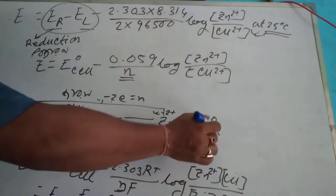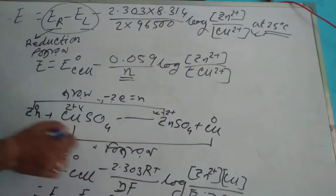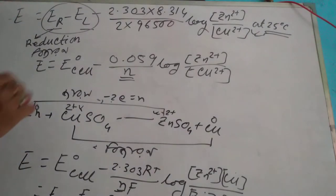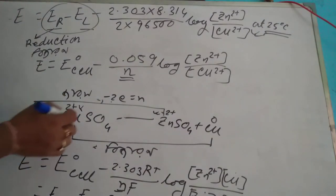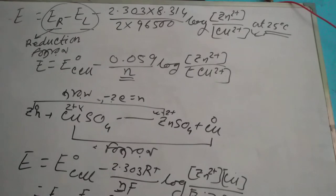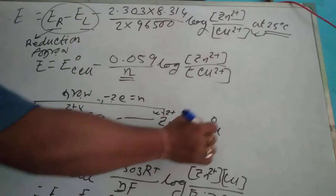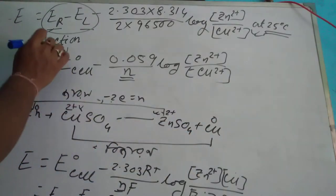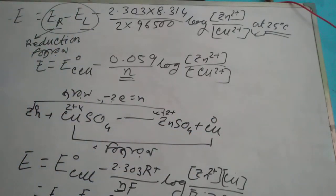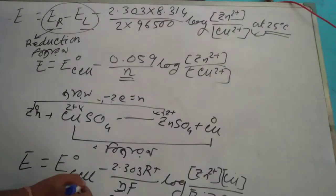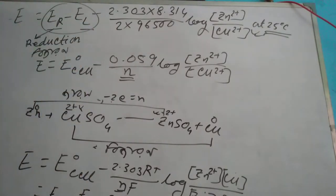Cu²⁺ becomes Cu. The reactions involve CuSO₄ and ZnSO₄. We're calculating E, which is ER minus EL.